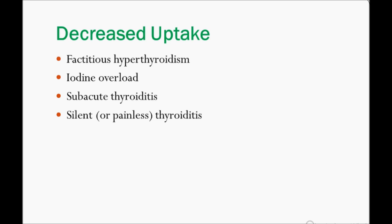Decreased uptake is seen in factitious hyperthyroidism — where the patient is taking exogenous thyroid hormones — iodine overload, subacute thyroiditis (discussed in the previous video), and silent or painless thyroiditis. So remember: increased uptake and decreased uptake and their respective causes. Thank you so much for watching.